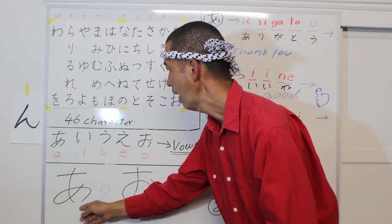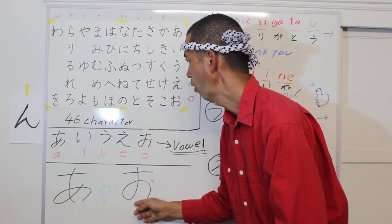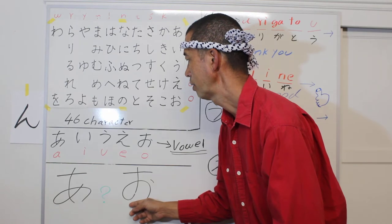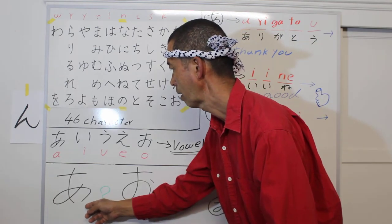A and O are very close characters. Very similar.